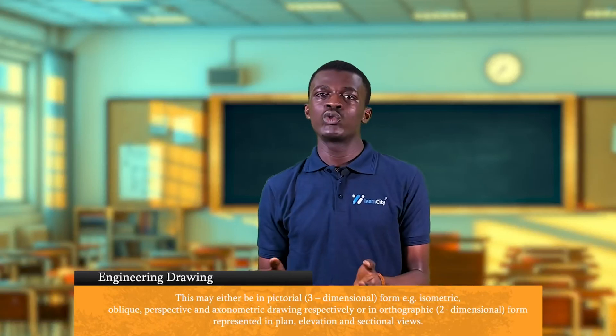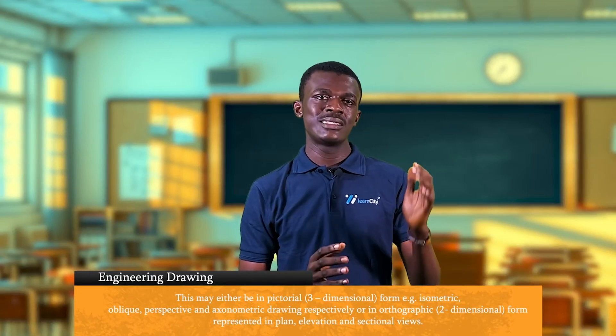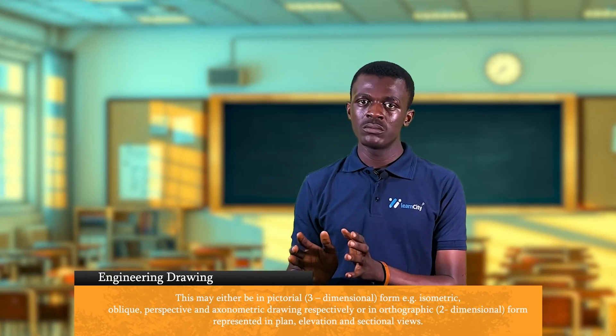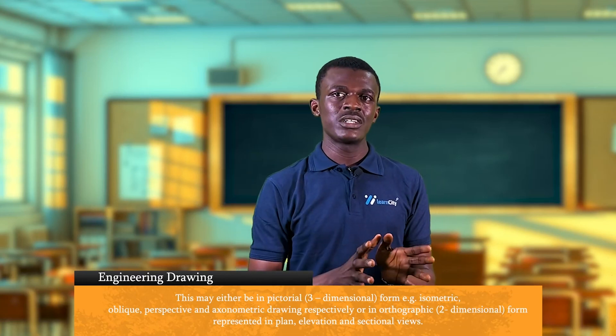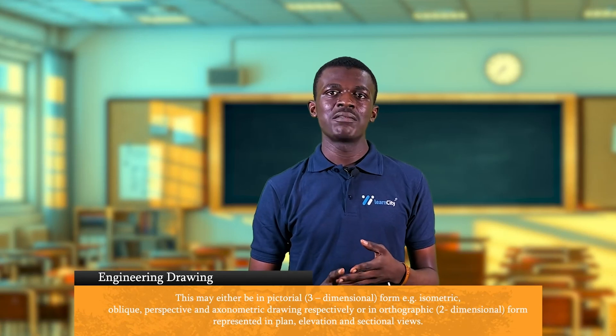Finally, on types of drawing, we have engineering drawing. This may be either three-dimensional form — having length, breadth, and height — or two-dimensional form, which has just the length and breadth. Types of engineering drawing include the isometric drawing, the oblique drawing, and the perspective drawing. And that would be the end of this section. See you in the next video.